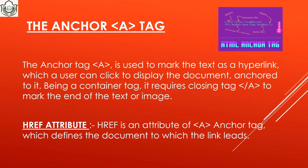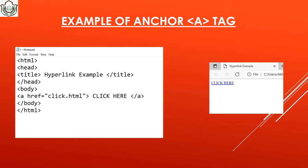The anchor tag is used to mark text as a hyperlink which a user can click to display the linked document. Being a container tag, it requires a closing tag — slash a. The href attribute of the anchor tag defines the document to which the link leads. For example: a href='click.html' then 'click here' then close — clicking this navigates from the current page to click.html.